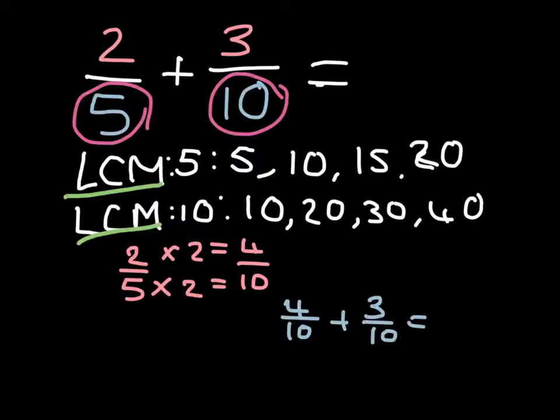So what you do to find the LCM, or the lowest common multiple? You find a few of the multiples of the two denominators. In this case, 5 and 10. So, the multiples that we have written down for 5 are 5, 10, 15 and 20. And the multiples we have written down for 10 are 10, 20, 30 and 40.